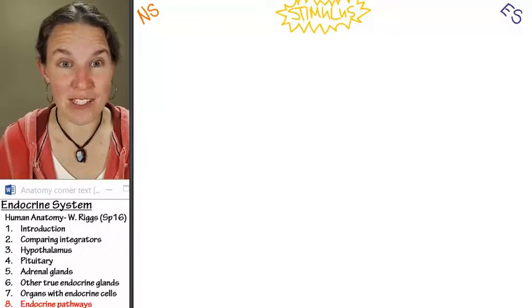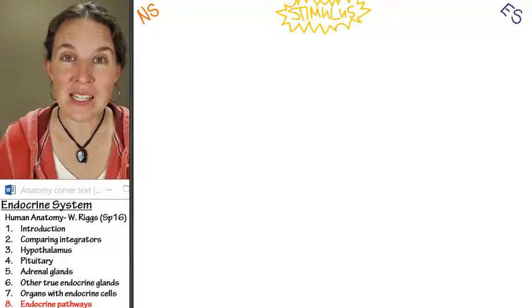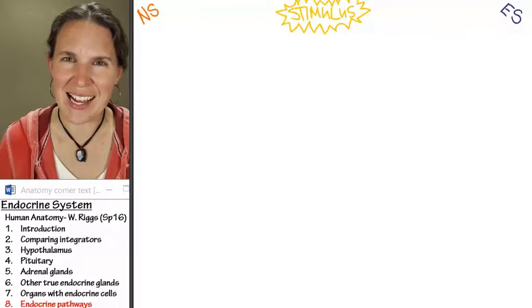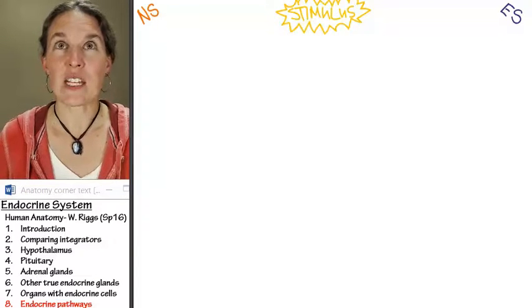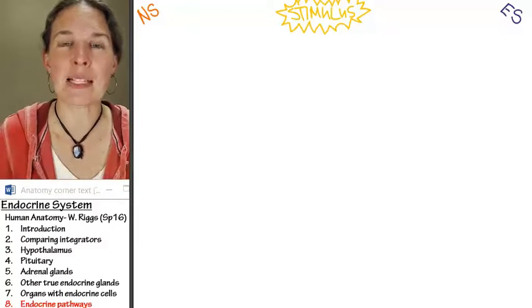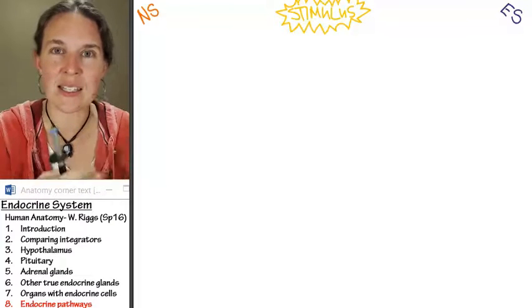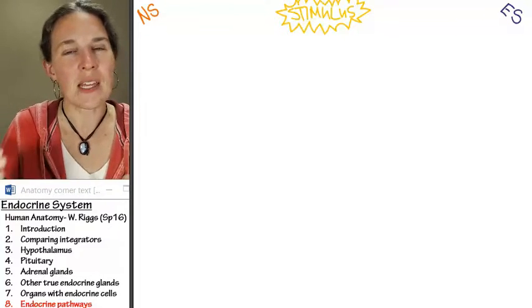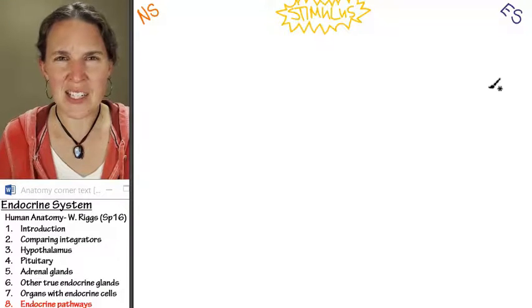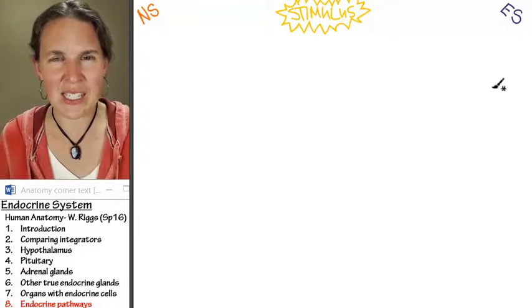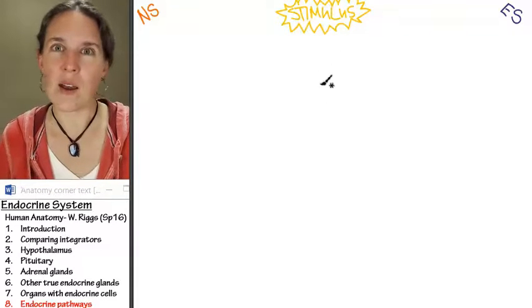An interesting difference between nervous system and endocrine system. Nervous system, the stimulus often is outside, something external, something in the environment. If the stimulus is being detected by somatic sensory receptors, it is something external that is causing the message. And the endocrine system, it's always inside. And I say that knowing full well that maybe there is a stimulus to the endocrine gland that actually does come from the outside, but I don't think so.